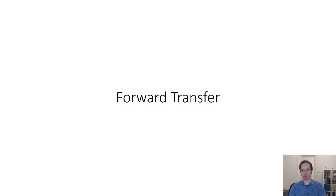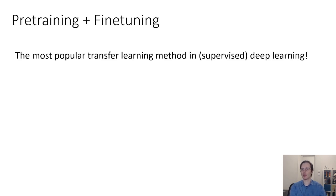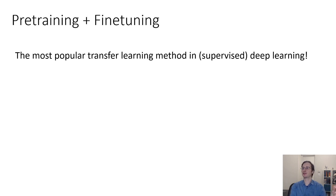In the first section discussing transfer learning algorithms, I'm going to talk about forward transfer. Outside of the world of reinforcement learning, one of the most popular transfer learning methods today is actually very simple. It corresponds to pre-training on one task and then fine-tuning on another task. This is basically the most popular transfer learning method in supervised deep learning.